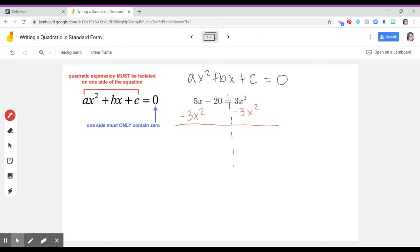And then I'll rewrite. So I have negative 3x squared. And then I'm going to bring down everything else. Since 5 is positive, I'm going to write plus 5x.